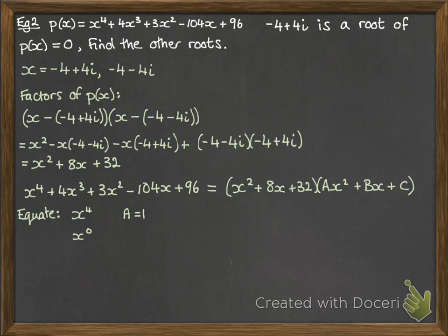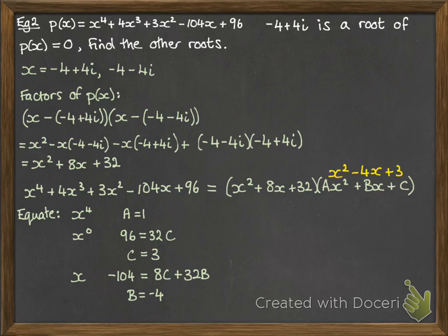Now looking at the constant terms, because that's the next easiest thing to do. On the left, we have 96, and on the right, we get 32c once that would be multiplied out. So c is 3. And then the next easiest thing to look at is the x terms. On the left, we have minus 104, and on the right, you would get 8c plus 32b, and that gives us b is minus 4. So our quadratic there, if we put those values in, would be x squared minus 4x plus 3. Now we go and factorize that one.